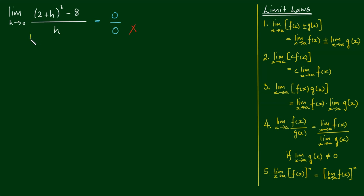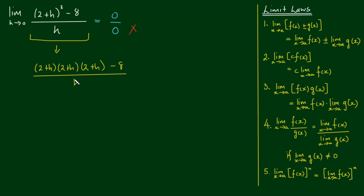Let's now take this expression. There really isn't any shortcut here except to expand the (2 plus h) cubed term. So if we write this as (2 plus h) times (2 plus h) times (2 plus h), and copy the rest down — minus 8 all over h — I'm going to expand this manually. You can use the binomial theorem if you like. Going through the first two terms, we have 2 times 2 plus 2 times h plus 2 times h plus h squared.